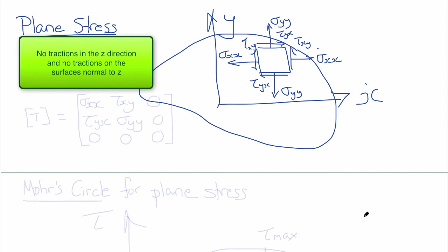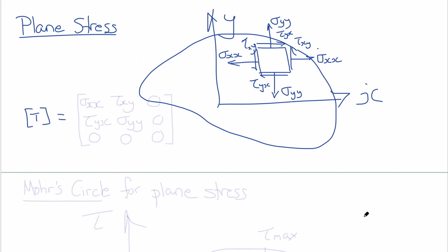The state of plane stress is: T = [σ_xx, τ_xy, 0; τ_yx, σ_yy, 0; 0, 0, 0].